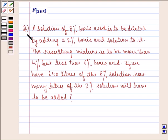Welcome to Learnohub. My name is Mansi and I'm going to help you with the following question. The solution of 8% boric acid is to be diluted by adding a 2% boric acid solution to it. The resulting mixture is to be more than 4% but less than 6% boric acid. If we have 640 liters of the 8% solution, how many liters of the 2% solution will have to be added?